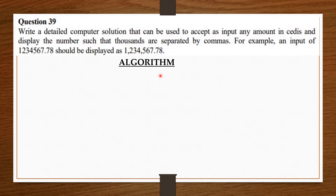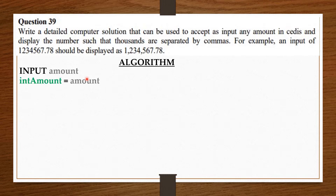We are going to take the amount that the user wants to separate with commas. We are going to take it from the user — so we say input amount. Now we are going to convert this amount to an integer, so we say int_amount equals amount. We are converting the amount the user entered into an integer.